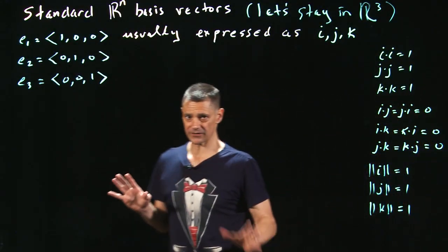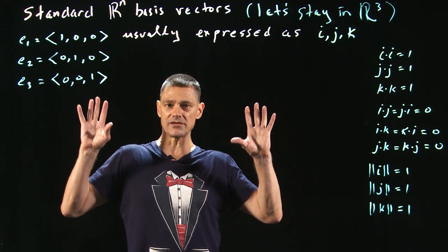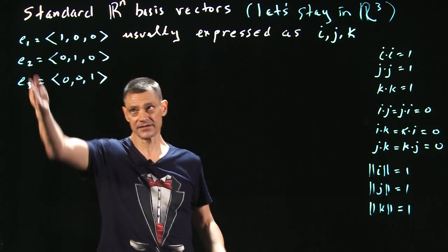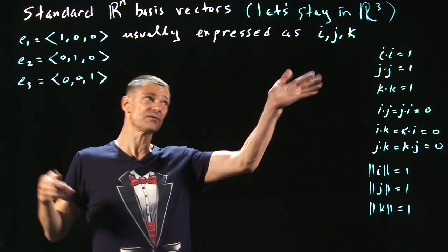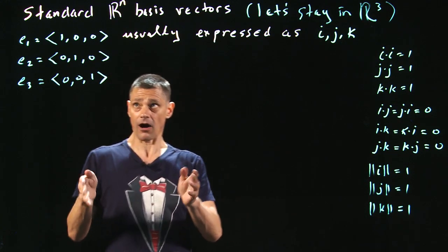OK, let's talk about basis vectors for a little bit. So in general, what is most commonly used in Rⁿ for whatever n is this notation, E₁, E₂, E₃. It would go all the way to Eⁿ. In this case, we're going to stay in R³. These are basis vectors for R³.